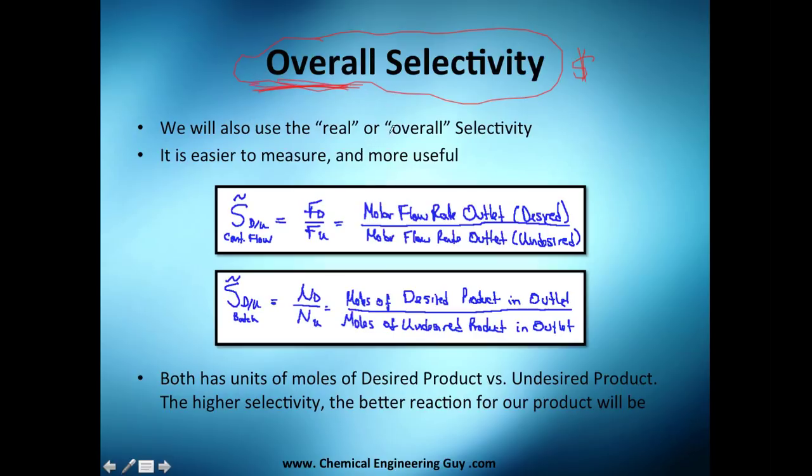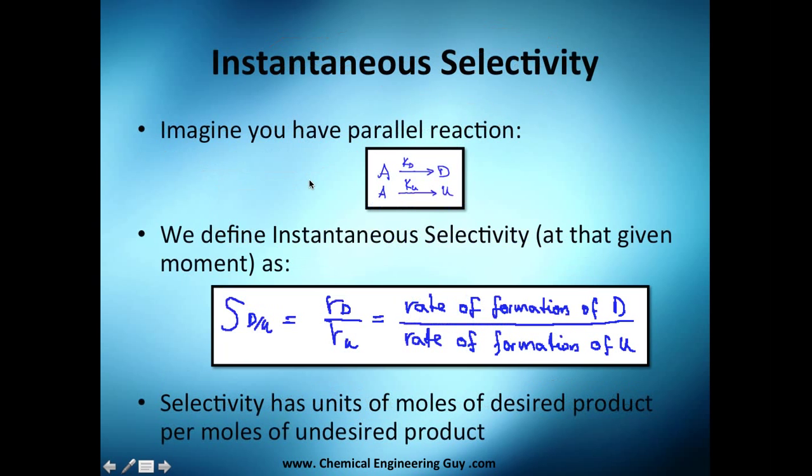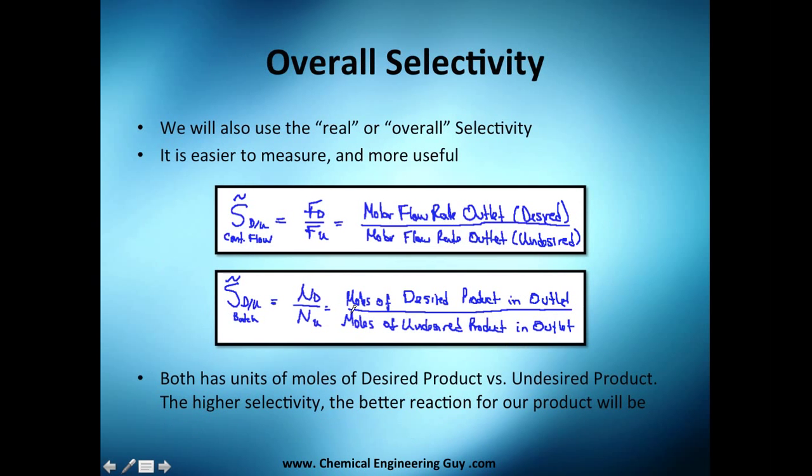It's easier to measure. Measuring rates of reactions, you remember from last chapters, is kind of difficult, but flow rates are very easy to measure - you just need a flow meter. Of course you'll need concentration because that gives you the general flow rate, but it's not that difficult.